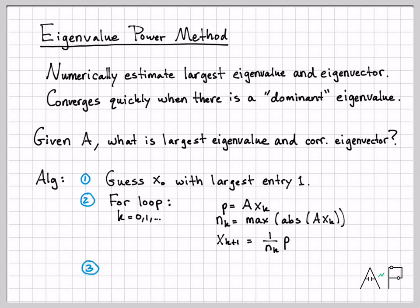Here's basically step three: you need to look at what's happening in that loop. What should happen — as long as we've made our initial guess appropriately under these constraints and there is a dominant eigenvalue — is that this sequence of scalars, the n_k's (n0, n1, n2, n3, n4), should converge to lambda 1, the largest eigenvalue of the matrix. Similarly, these vectors x_k, as k gets large, should converge to the eigenvector that corresponds to the largest eigenvalue.